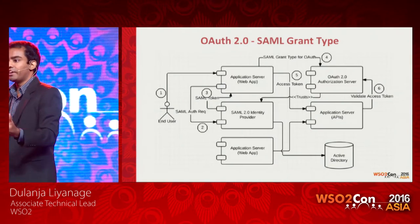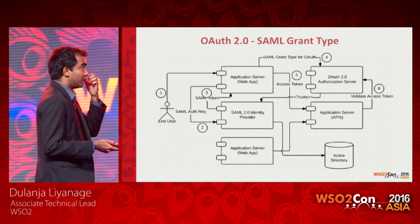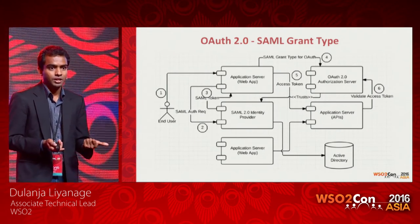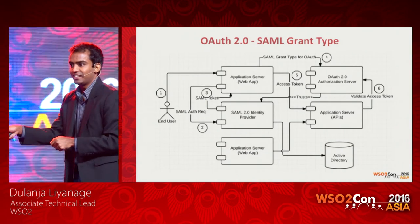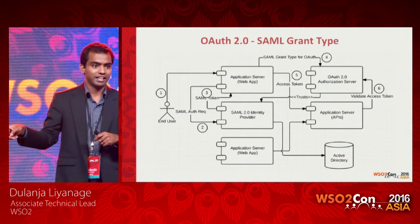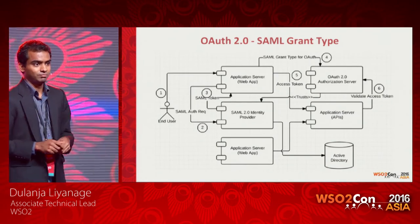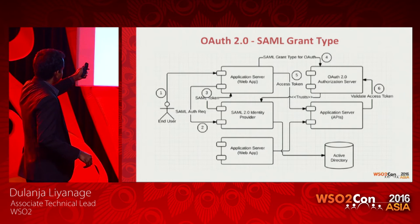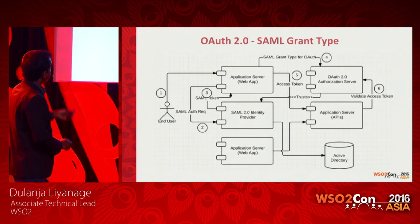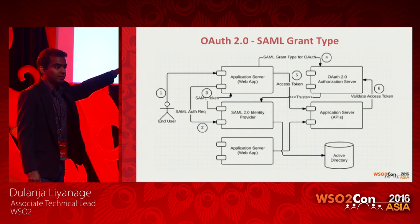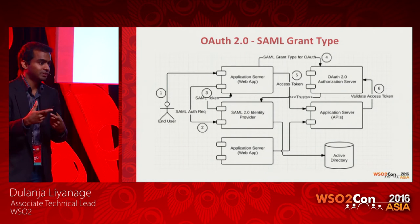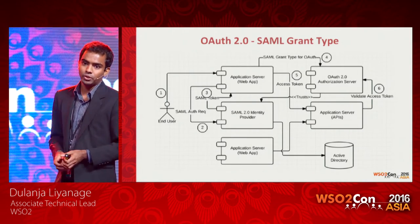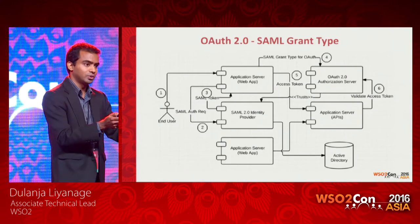Now think about this: you already have SAML authentication in your web application. SAML is the most popular protocol for single sign-on. You already have a SAML assertion for a user and you don't want to authenticate them again to access an API. This is where the SAML bearer grant type comes in. You give the SAML token to the authorization server or API Manager and get an OAuth access token in exchange. So you exchange the SAML token for an OAuth token and can now access the API using that OAuth token, without needing to re-authenticate the user for the authorization flow.